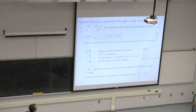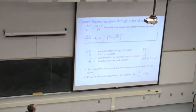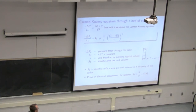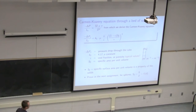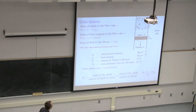LC is the length or height of our packed bed — easy to measure. Delta P is easy to measure. The viscosity constant K and the viscosity of the fluid are also easy to measure.